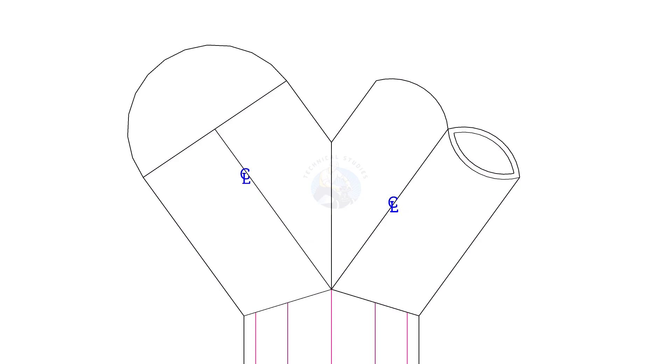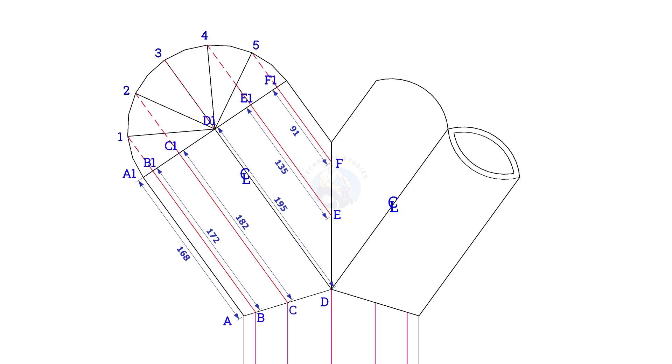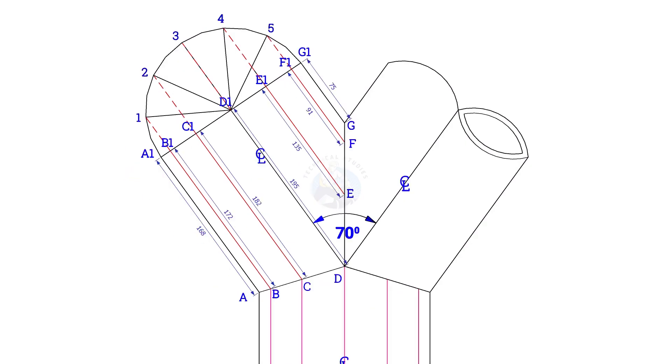To lay out the true length of the branches, the process is the same. Draw a half circle and divide it into 6 parts. Draw perpendicular lines as shown. Note down the lengths.